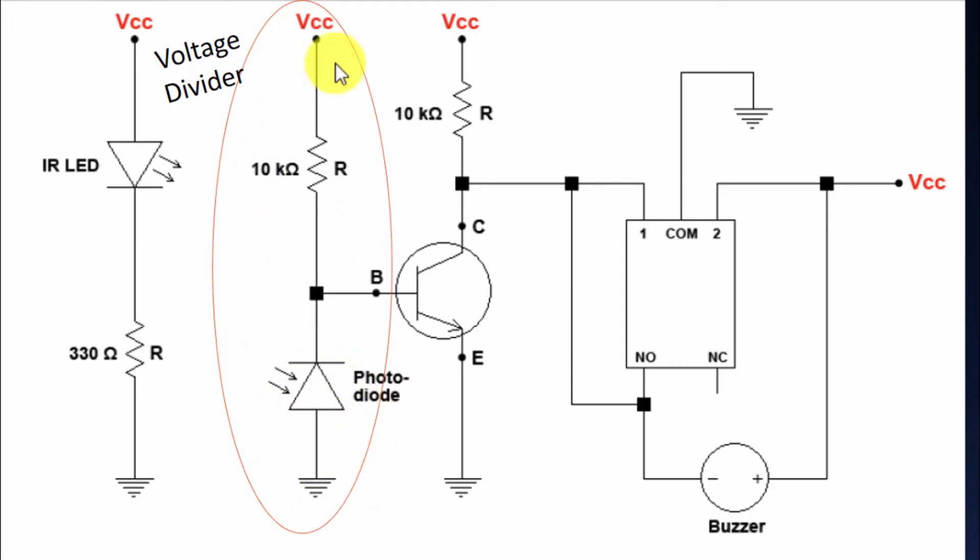It will now be comparable to this 10 kilo ohm resistor. The base voltage will be something apart from the zero which we got in the earlier case, so the VBE will become positive.